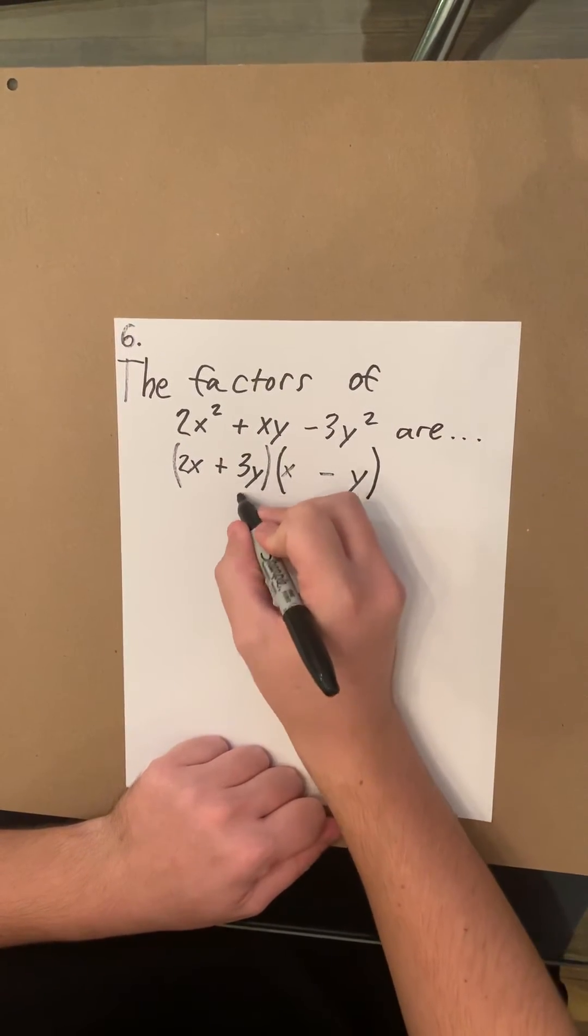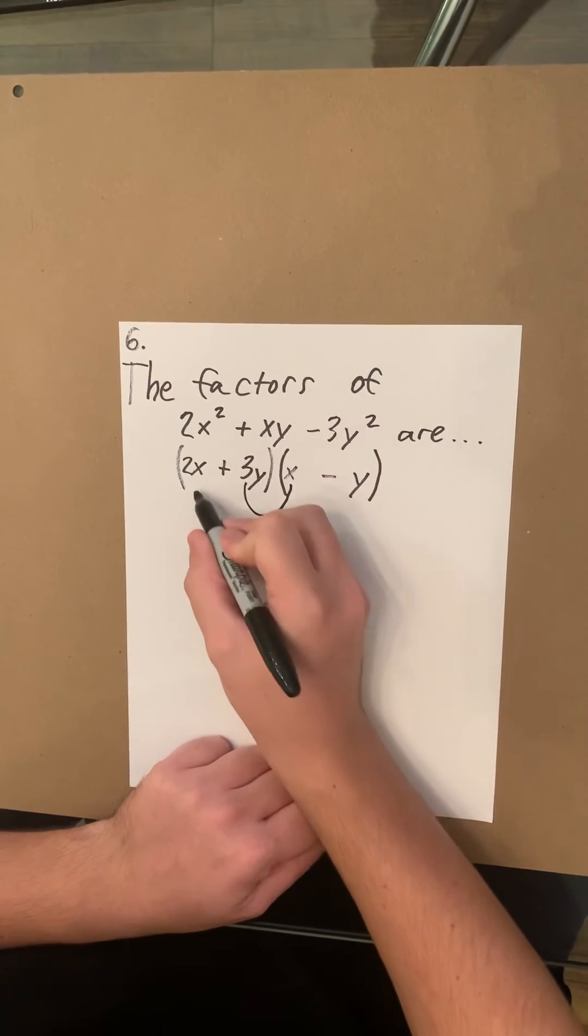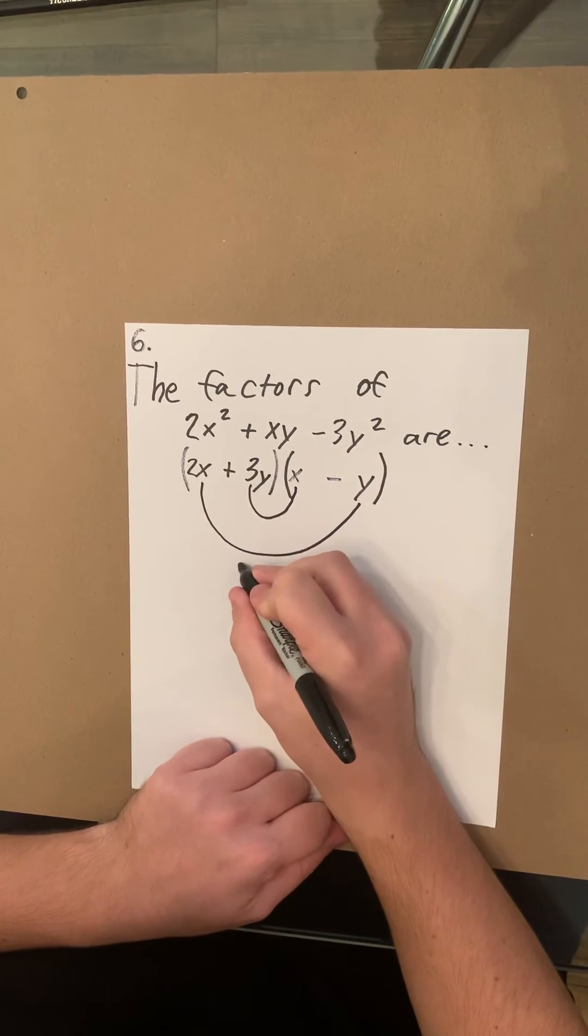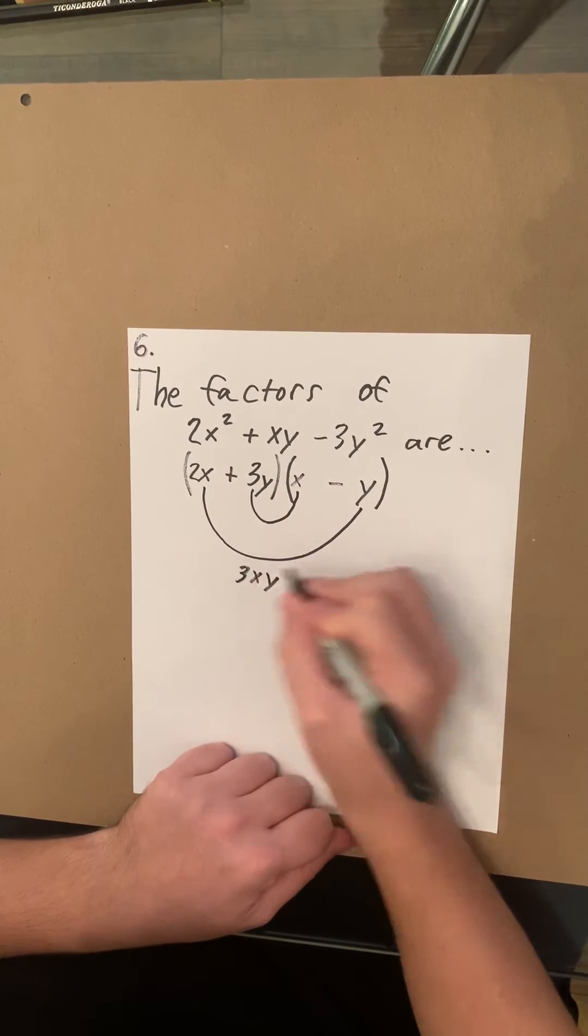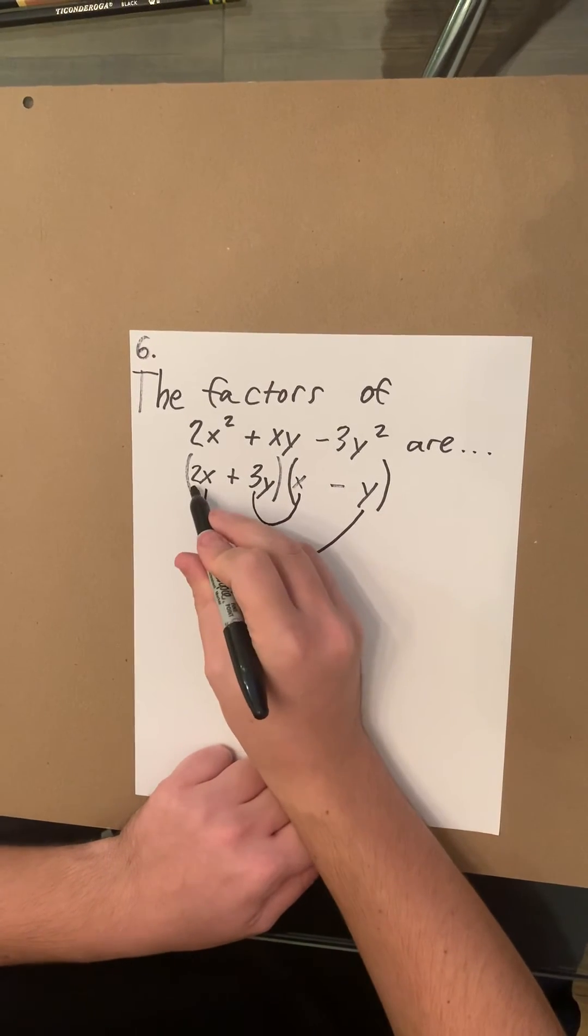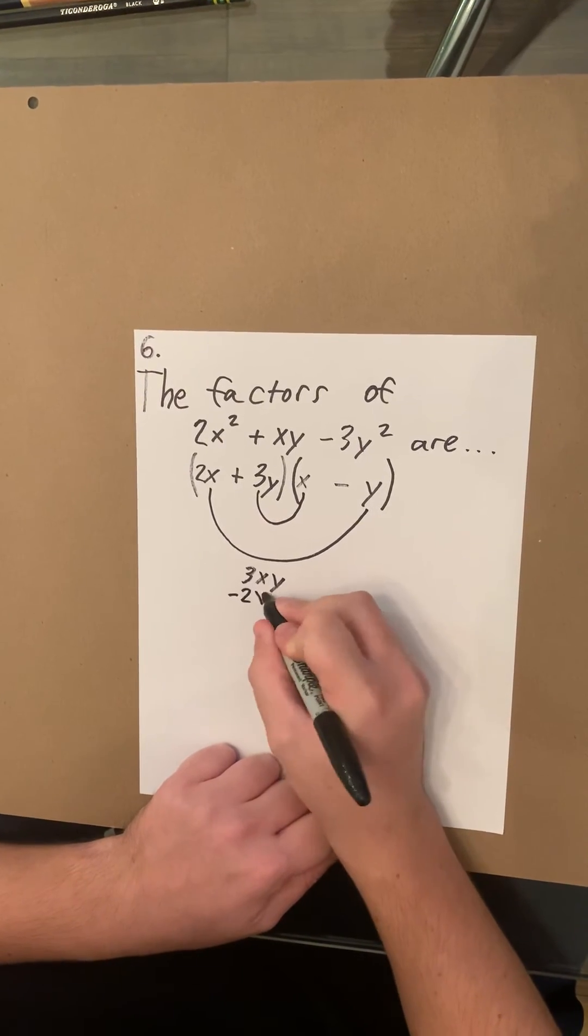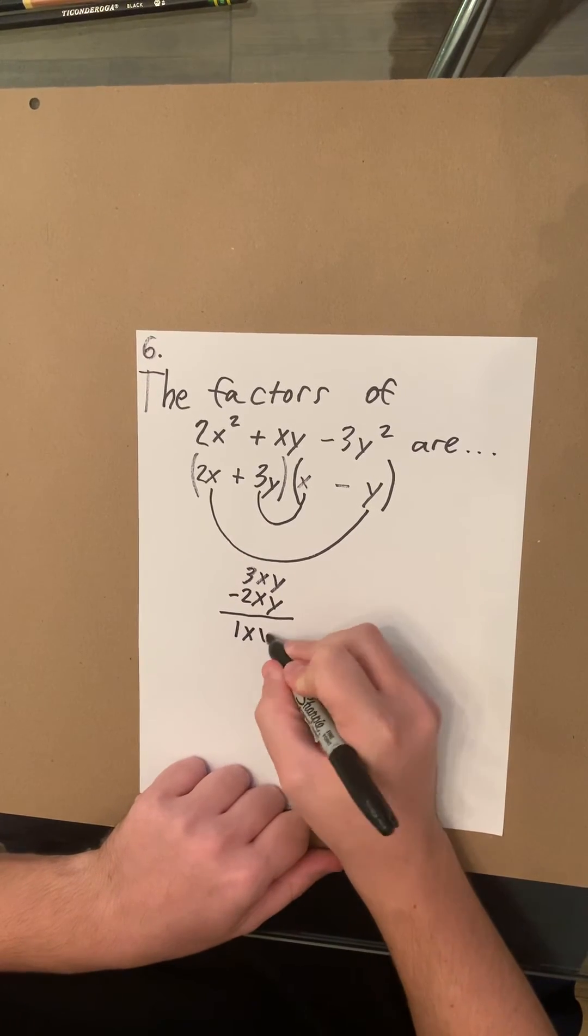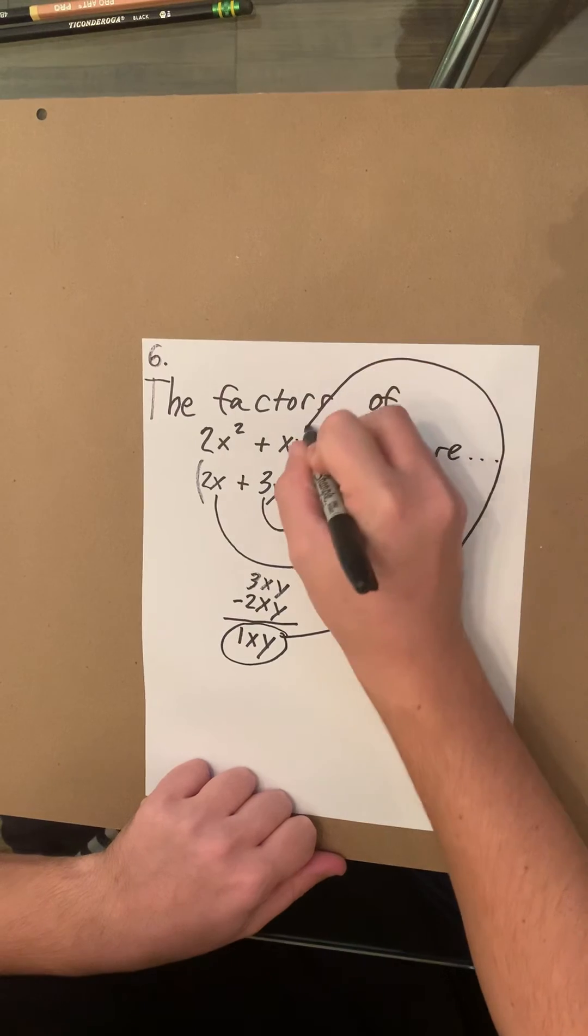Now we're going to do what I showed you in the previous question: multiply these two together and these two together, then add them up. So we get 3xy, and then we have 2x times -y, which is -2xy. Add those up and you get xy, which equals this middle term.